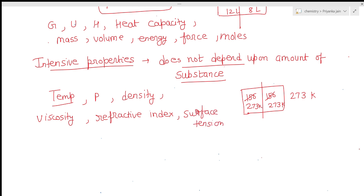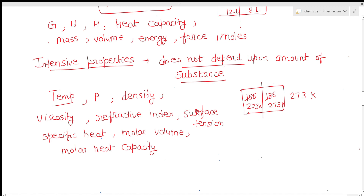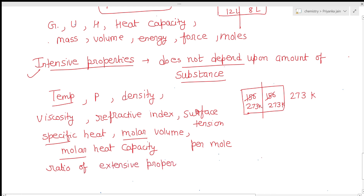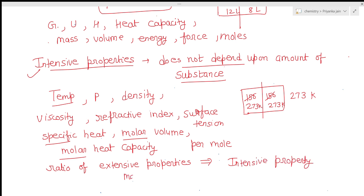Molar volume and molar heat capacity are also intensive properties. Whenever you see the term 'molar,' 'specific,' or 'per mole,' such properties are intensive. One more important point: the ratio of two extensive properties is actually an intensive property. For example, mass divided by volume — both are extensive — gives density, which is an intensive property.